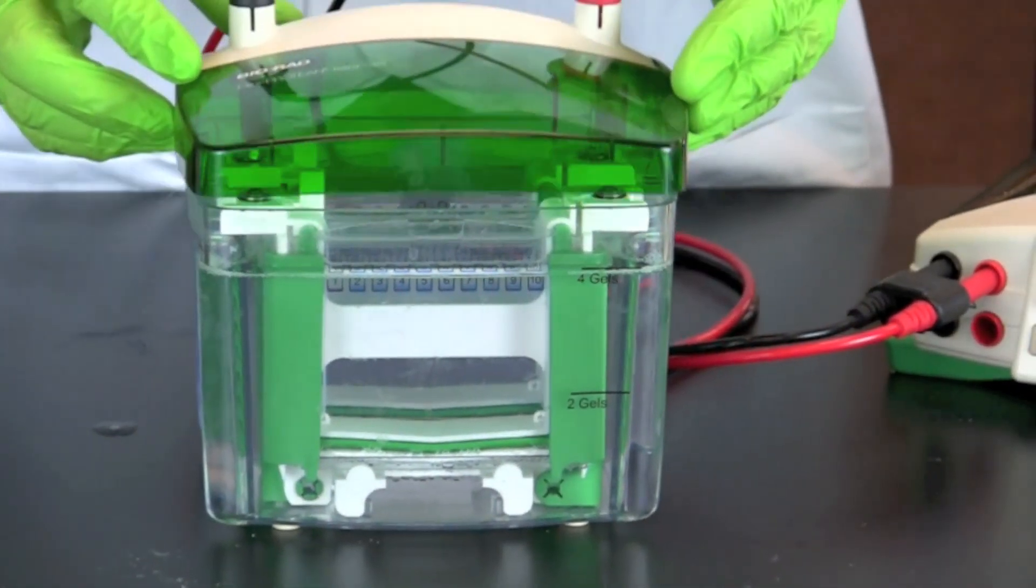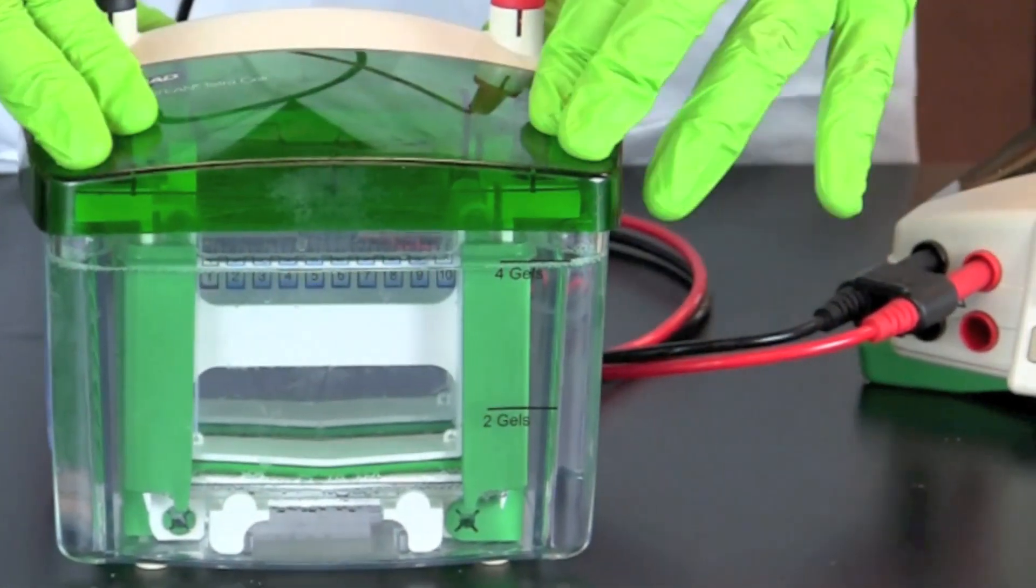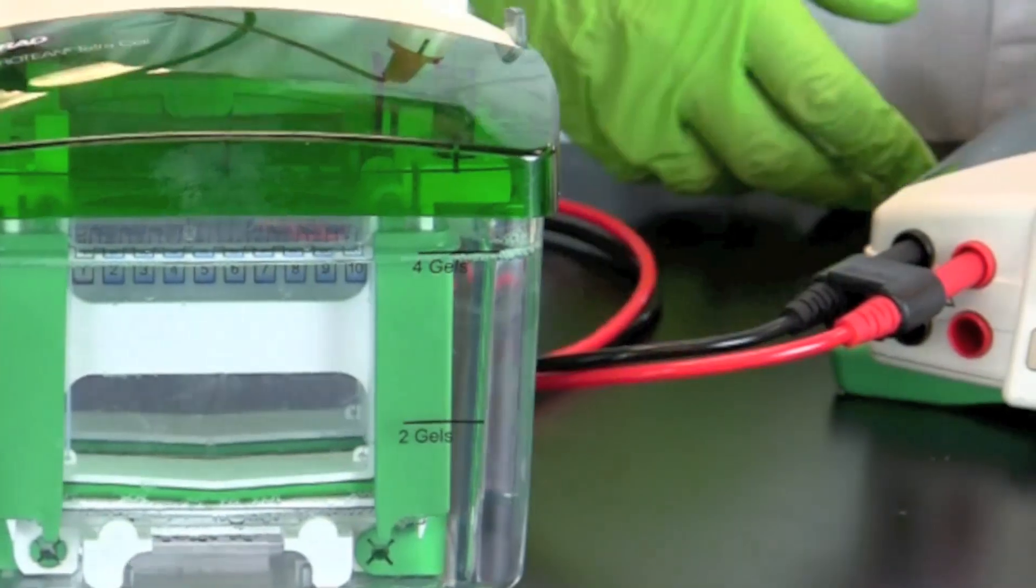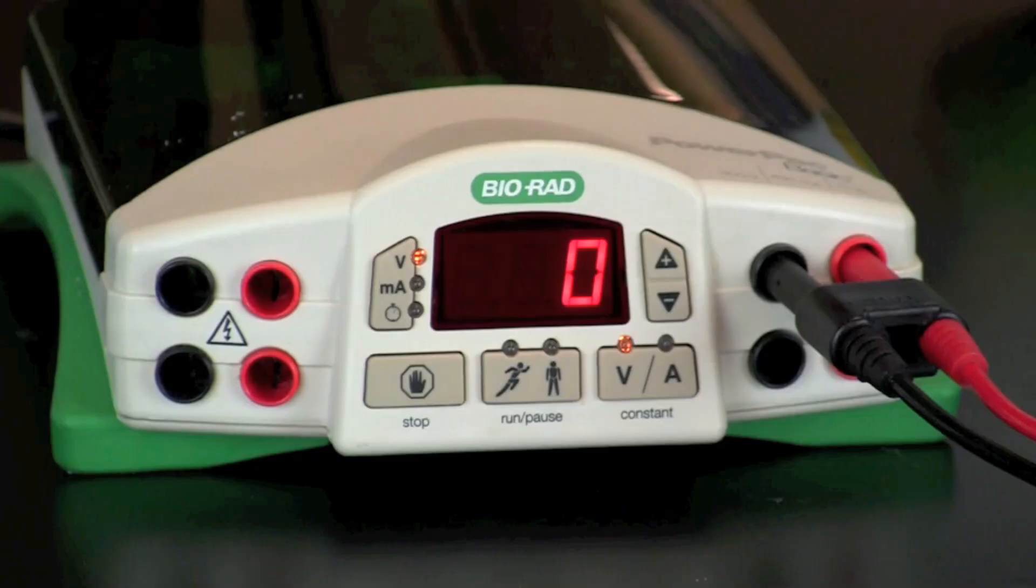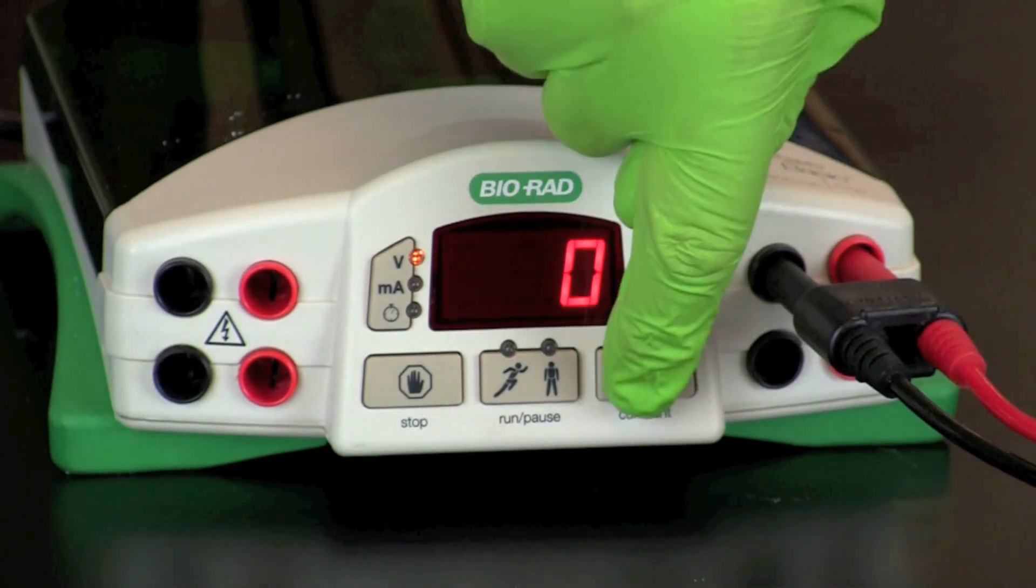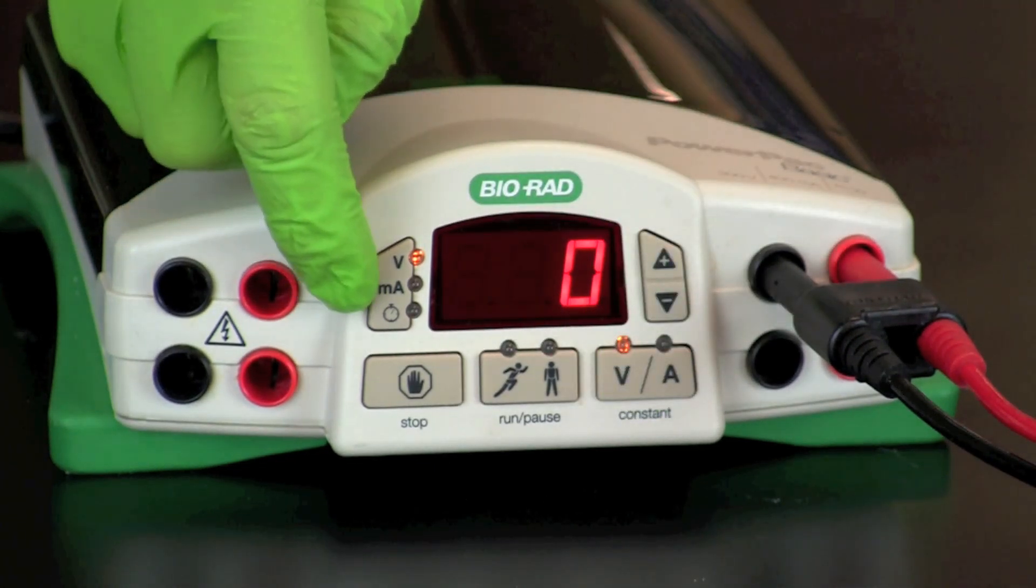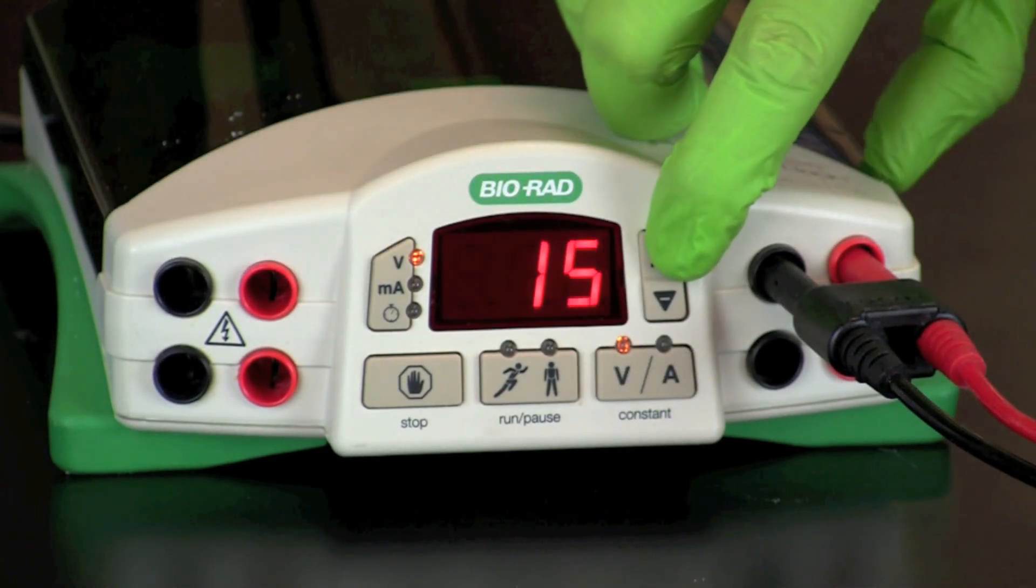Place the lid on the electrophoresis chamber. Connect the electrical leads into the power supply in the proper orientation, red to red and black to black. Turn on the power and set the voltage at 200 volts.